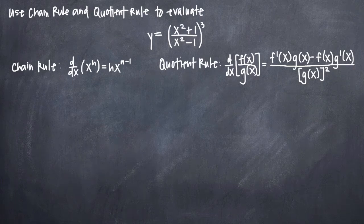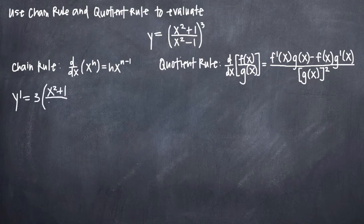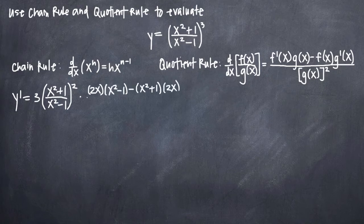Use chain rule and quotient rule to find the derivative of this function. For the chain rule portion, imagine that x to the third is your outside function, and x squared plus 1 divided by x squared minus 1 is your inside function. Apply power rule to take the derivative of the outside function, then multiply by the derivative of the inside function using quotient rule to find it.